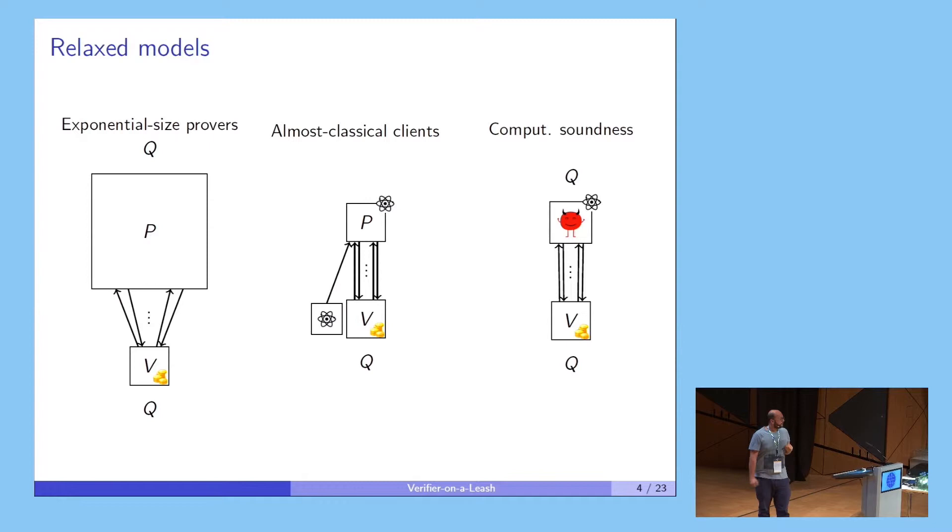This is the ideal world. We really don't know how to do it now, but we can relax the model. One thing that we know from classical complexity theory is that BQP is in p-space, so we have an interactive proof system where the prover is classical but exponential. Or we could give some limited quantum power to the verifier, and we have very efficient protocols in this setting. A third model would be maybe we don't need statistical soundness - we could have computational soundness. In this recent work by Mahadev, she showed the first protocol in this setting.